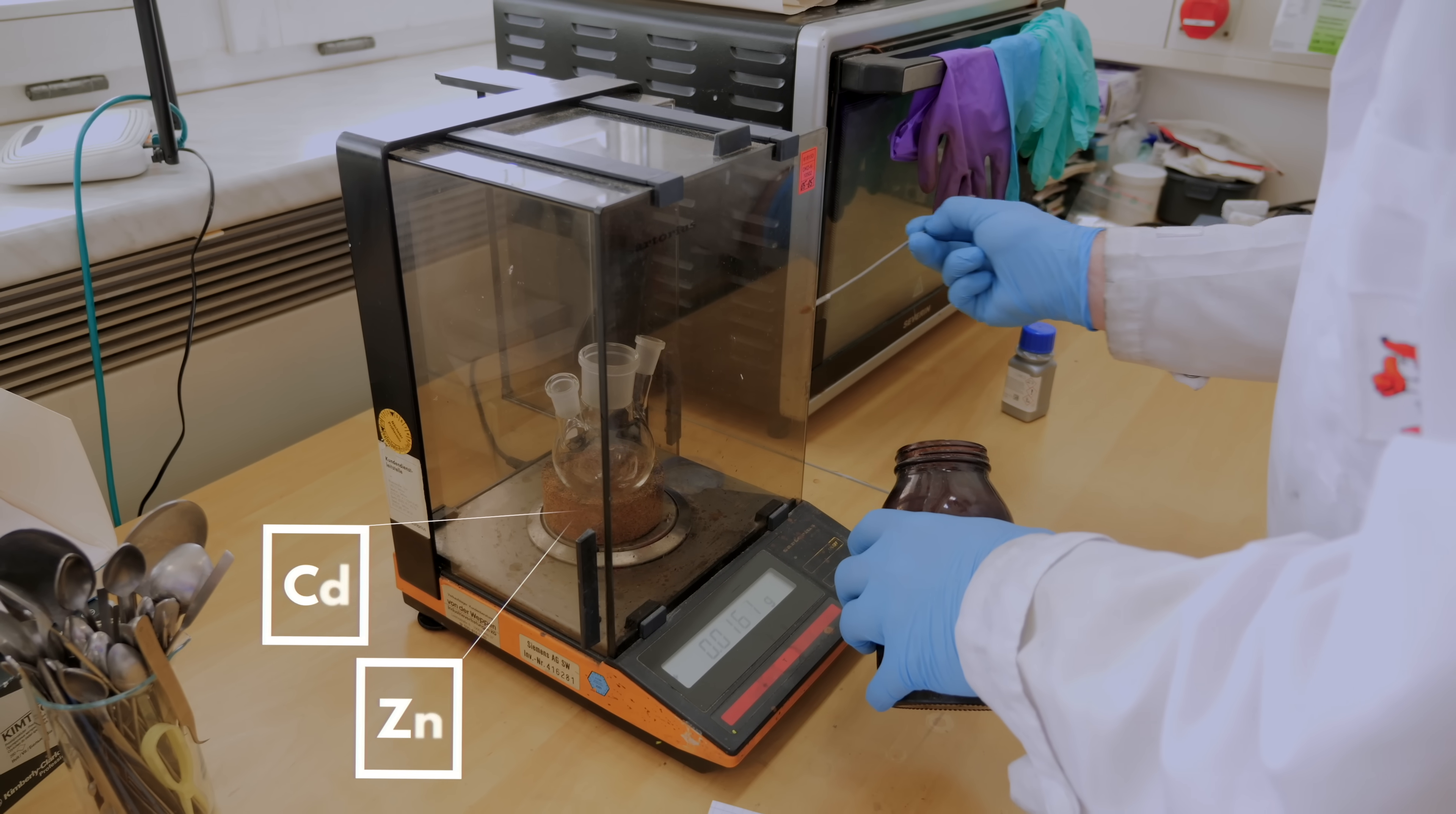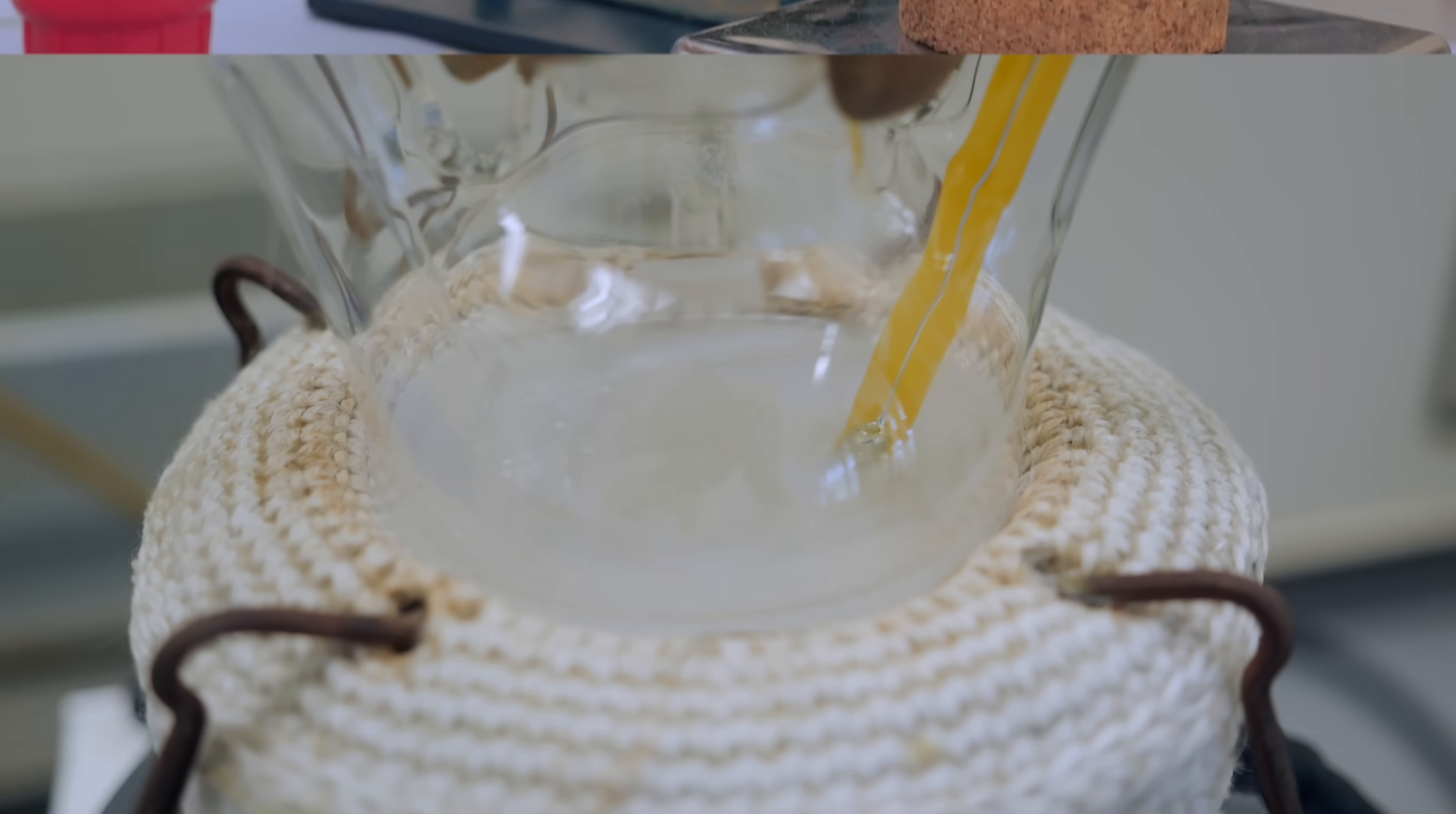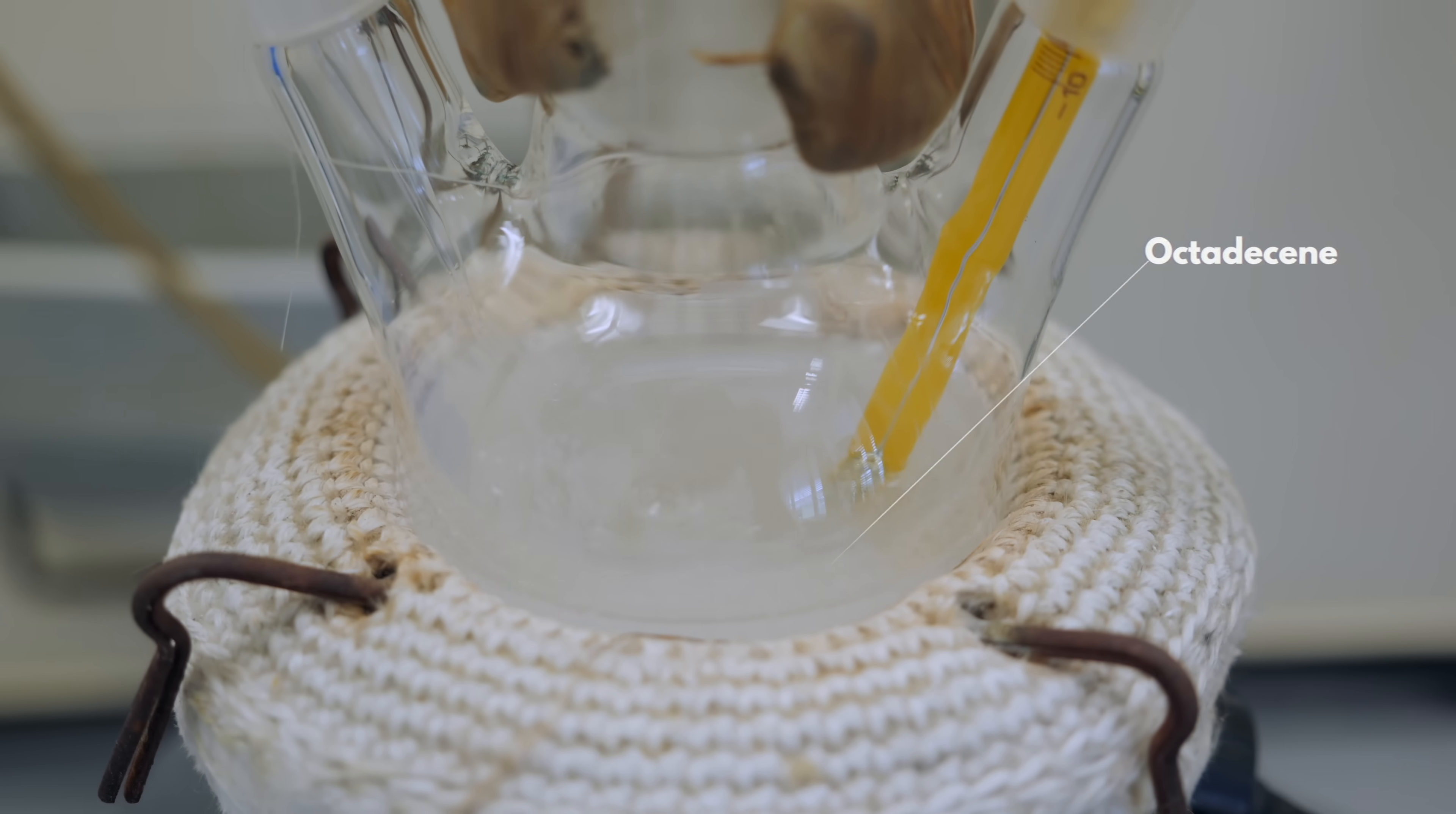Two of those four, and specifically a source of cadmium and zinc, were measured out as salts and added to a flask. And to this we added a liquid called octadecene. This is a so-called reaction medium, meaning that it is needed so the various materials can dissolve in this liquid, so that they can react to each other easily later on.